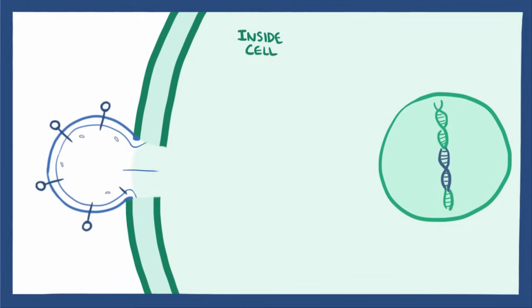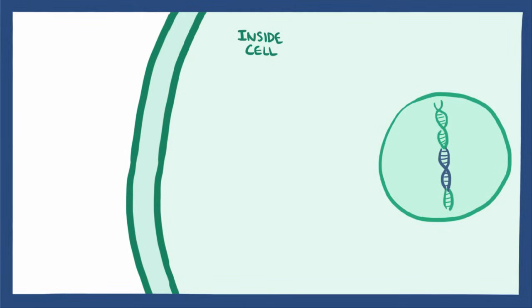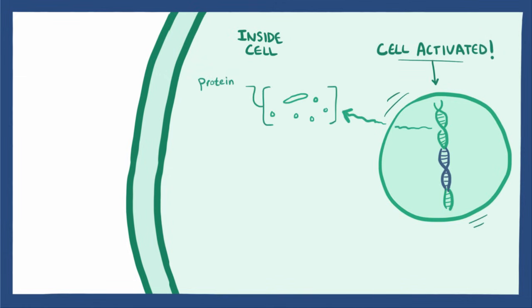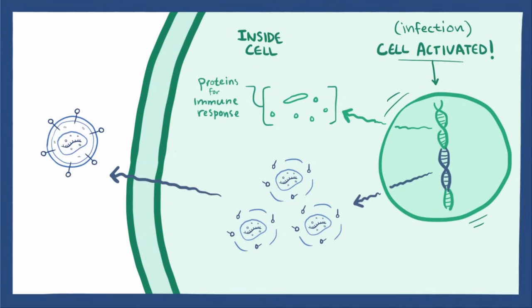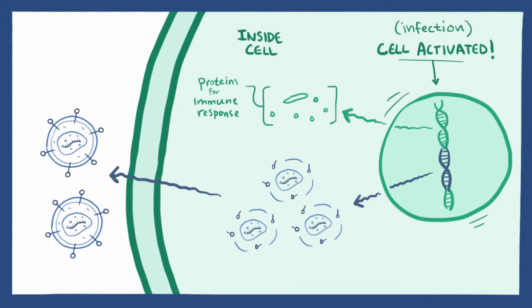Here's the actually sneaky part: when the immune cells become activated, they start transcribing and translating proteins needed for the immune response. Ironically, this means that whenever an immune cell is exposed to something that causes it to start up an immune response — like any infection — the immune cell ends up inadvertently transcribing and translating new HIV viruses, which bud off from the cell membrane to infect more cells.